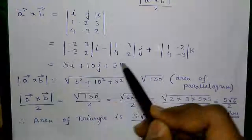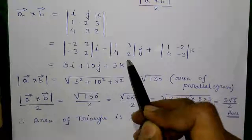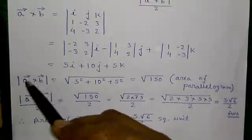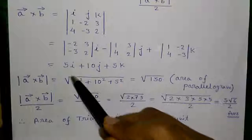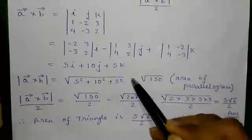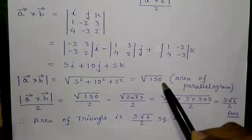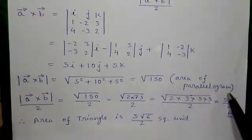Now we will find length of this resultant vector which is represented as modulus of A cross B which is equals to root over 5 square plus 10 square plus 5 square equals to root over 150. This is the area of the parallelogram.